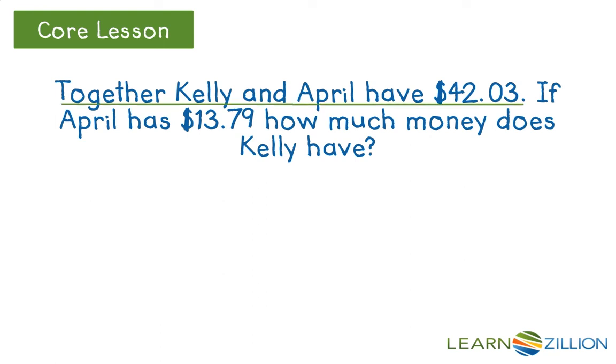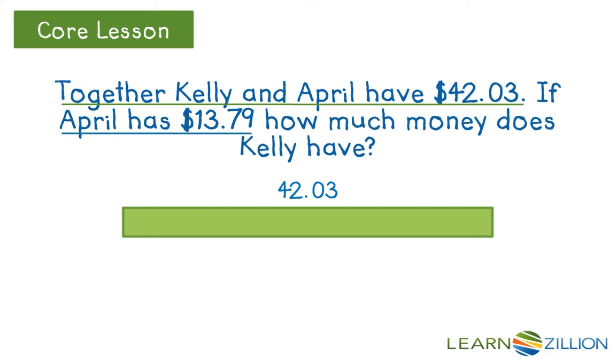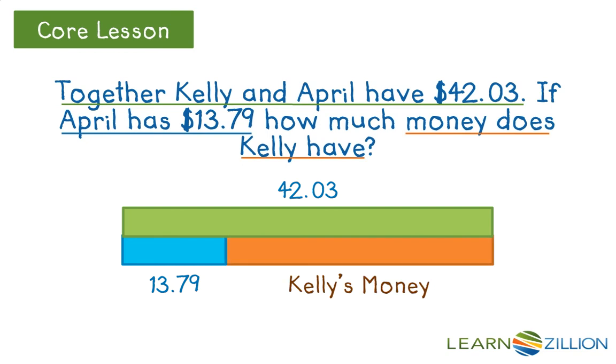First, we know together the girls have $42.03. This would be our first bar. Bar models do a great job of showing the relationship between a total and its parts. So if $42.03 is our total, what would be our parts? What April and Kelly have individually. So if April has $13.79, that would be a small bar, and we are left wondering how much money Kelly has. So our bar model shows that April's money plus Kelly's money equals $42.03.